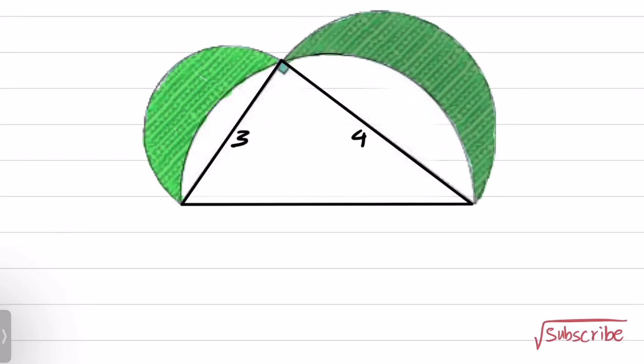Welcome to a new episode of MathsDartic. In this video, a right triangle with sides 3 and 4 is given, and we have three half circles here. One is on the left, one is on the right, and the third one is this half circle. The question asks for the area of the colored region.